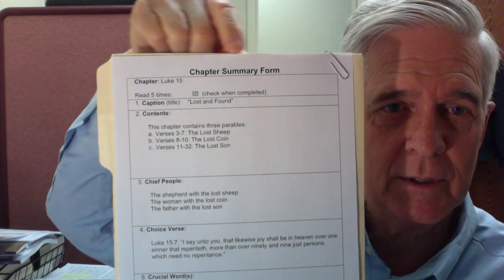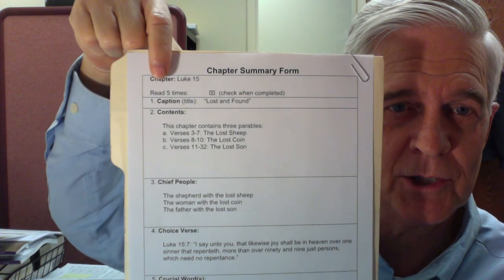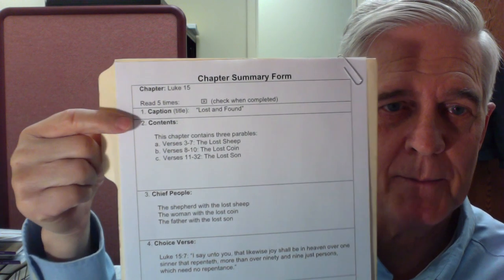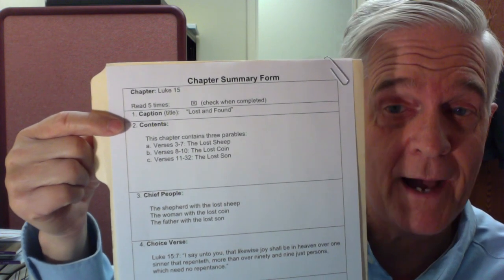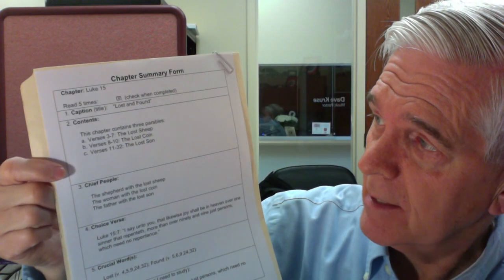And what I did is I went through Luke chapter 15, and I'll show you a completed form that I did myself. First of all, you'll notice in the top of the page that I put the chapter number right here, okay, chapter 15. You'll notice that the caption that I put for it was lost and found. And then thirdly, you have your contents. Now for the contents, I say this chapter contains three parables, verses 3 to 7. You have the lost sheep. In verses 9 to 10, or 8 to 10 rather, you have the lost coin. In verses 11 to 32, you read about the lost son.